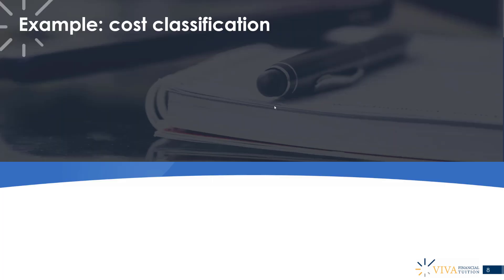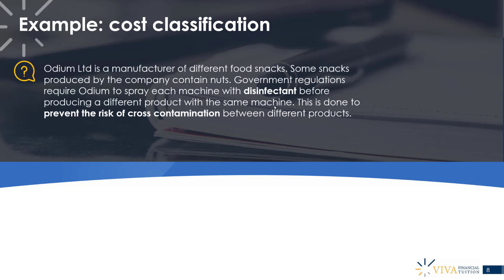We'll now run through an example to put all these points in a practical setting. Odium Limited is a manufacturer of different food snacks. Some snacks produced by the company contain nuts. Government regulations require Odium to spray each machine with disinfectant before producing a different product with the same machine, to prevent the risk of cross-contamination between different products.